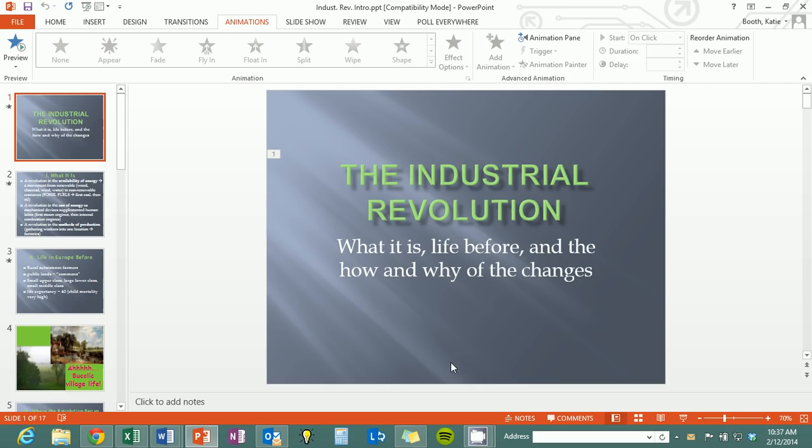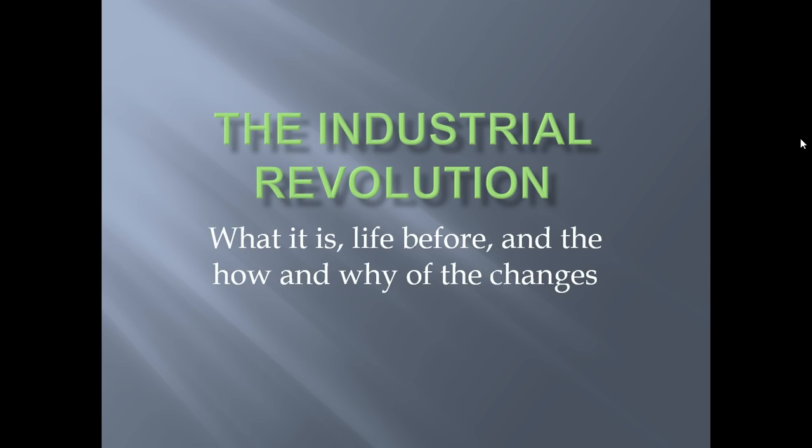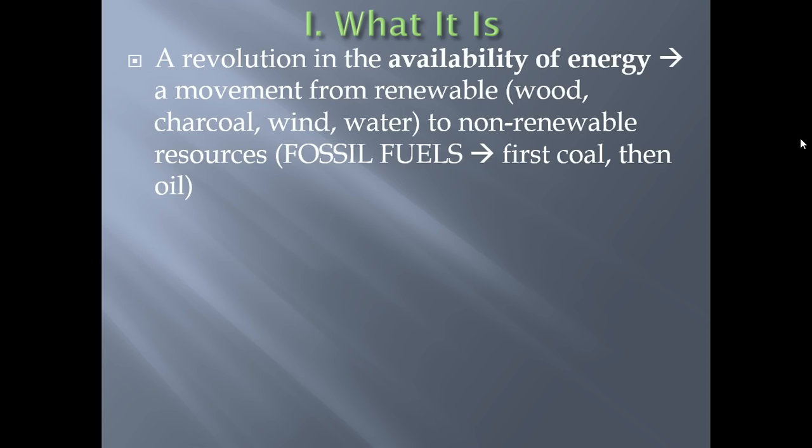We're going to be talking about the Industrial Revolution today, and the first thing we need to do is understand what it actually was before we discuss any of its effects or reasons it began. The Industrial Revolution is a huge change in the availability of energy — a movement from renewable sources of energy, for example wood and wind, to non-renewable sources of energy which we today call fossil fuels. Please double underline the words 'fossil fuels.' Fossil fuels were created millions of years ago through the breakdown of organic plant and animal materials placed under pressure over time, resulting in things like coal and oil.